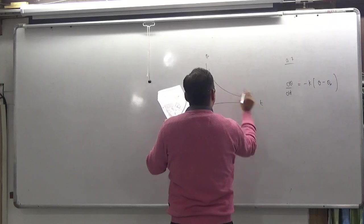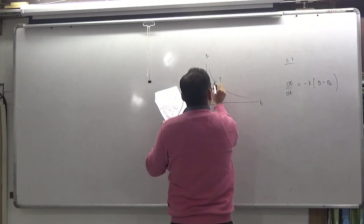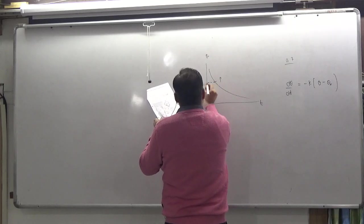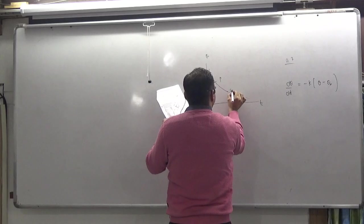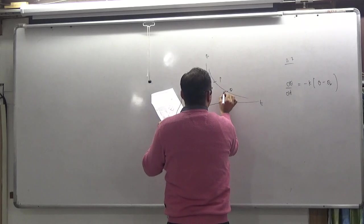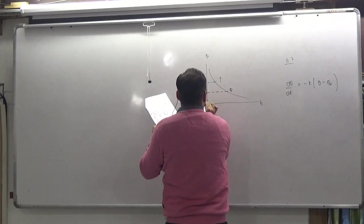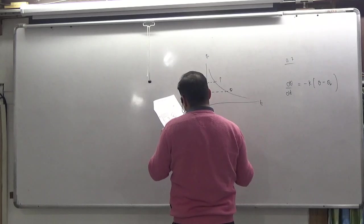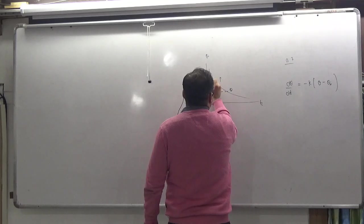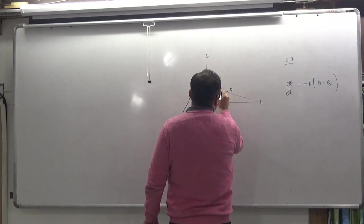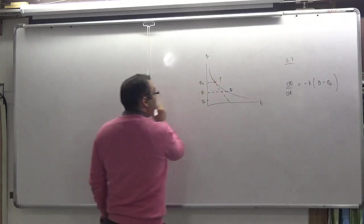You have two points on the theta-versus-time graph: point P with temperature theta-2 and point Q with temperature theta-1, and surrounding temperature theta-0. If I draw a tangent at point P and find its slope, then in Newton's Law of Cooling, dθ/dt means the slope of the tangent at that point.